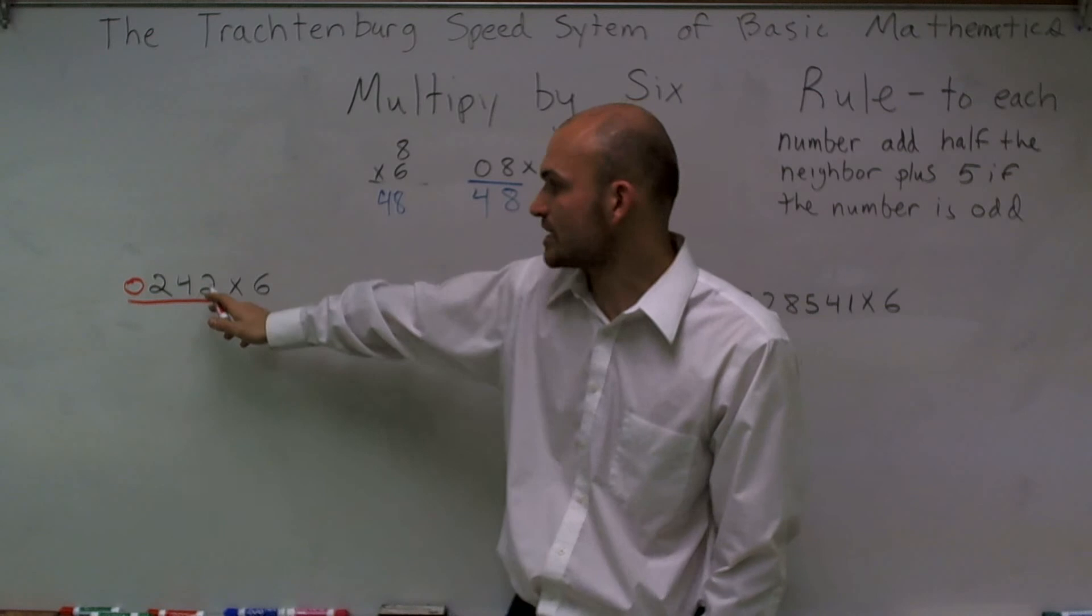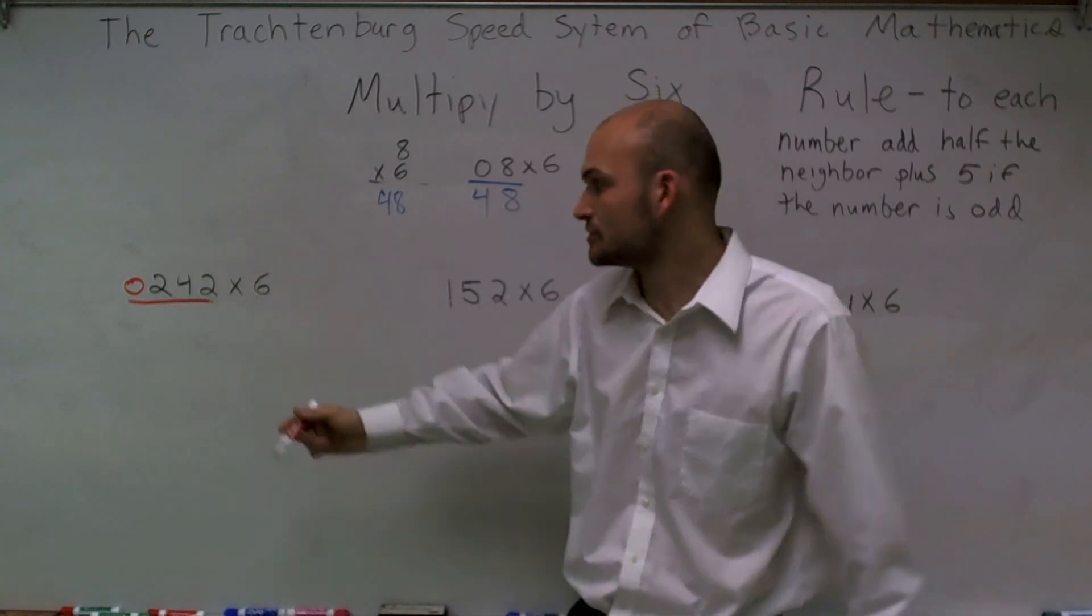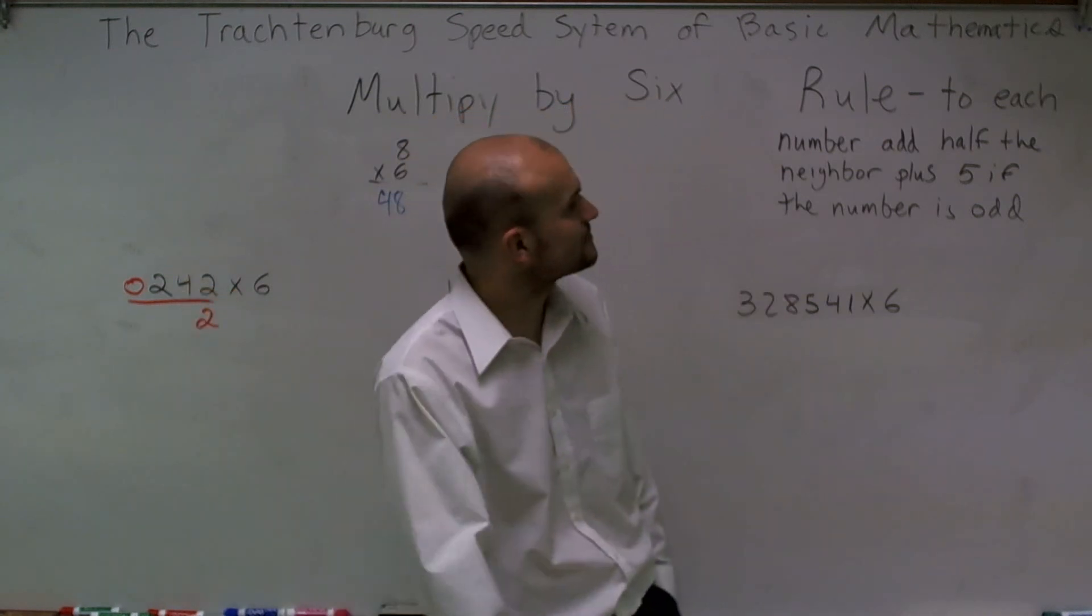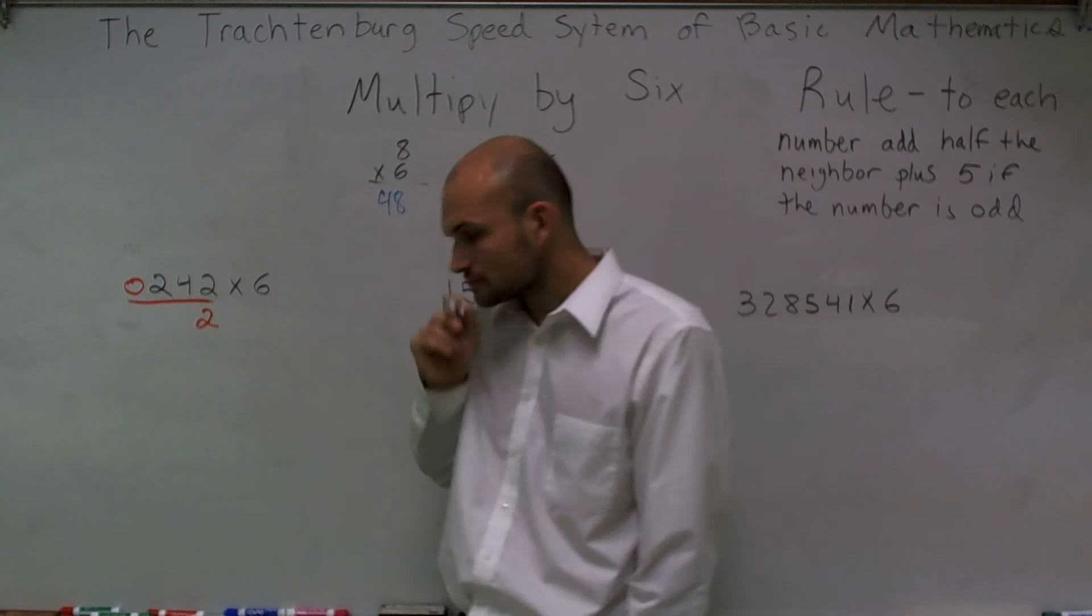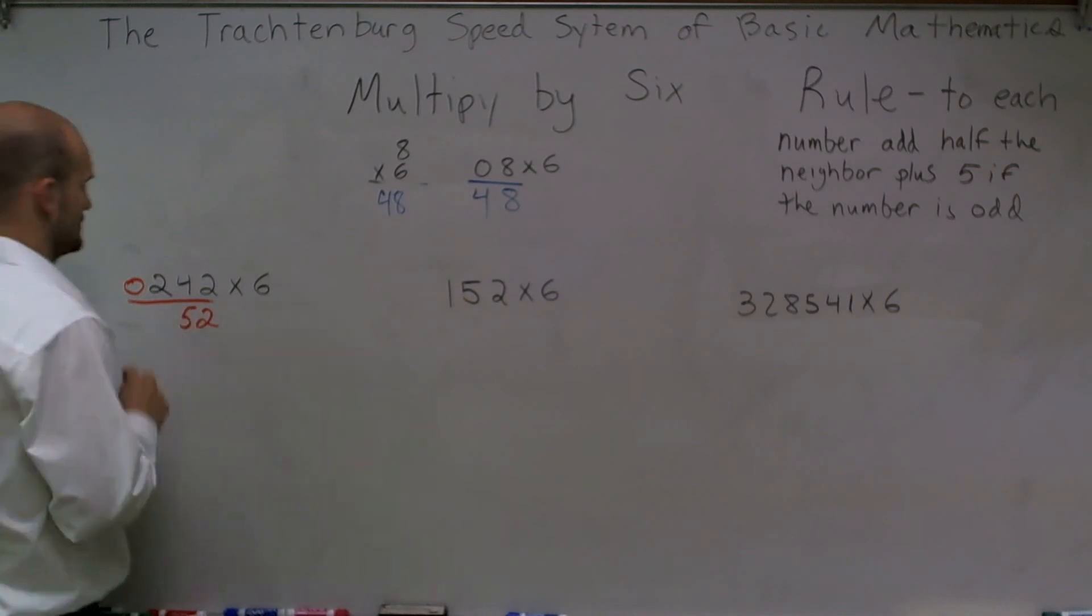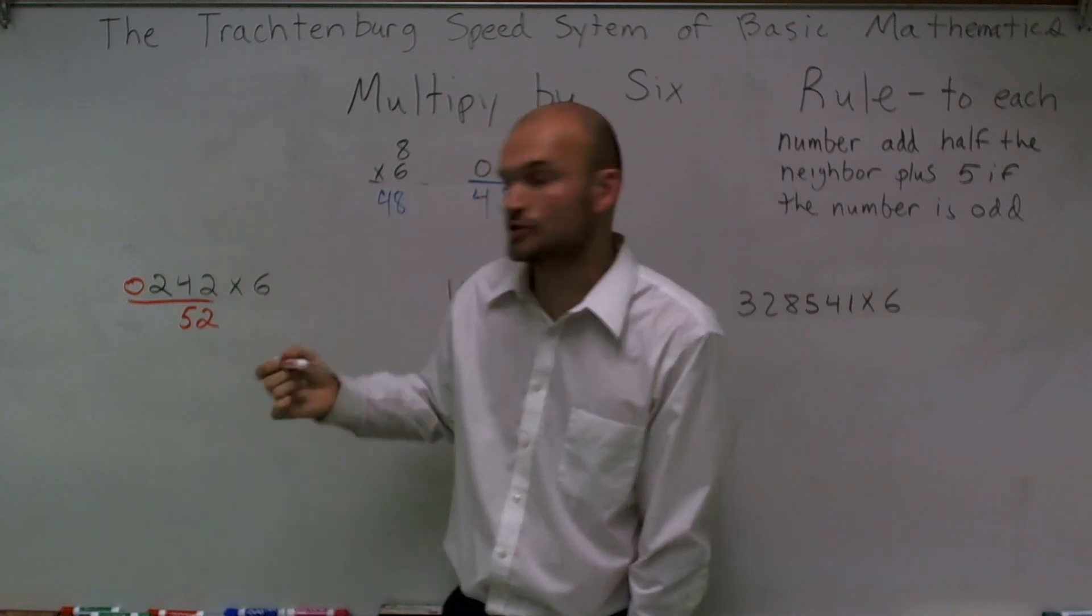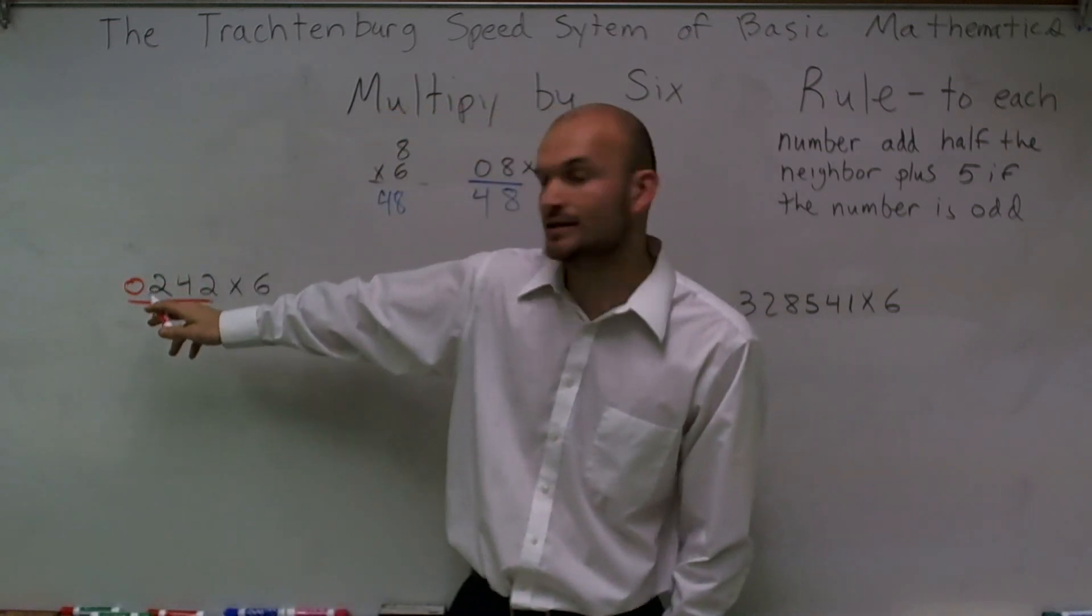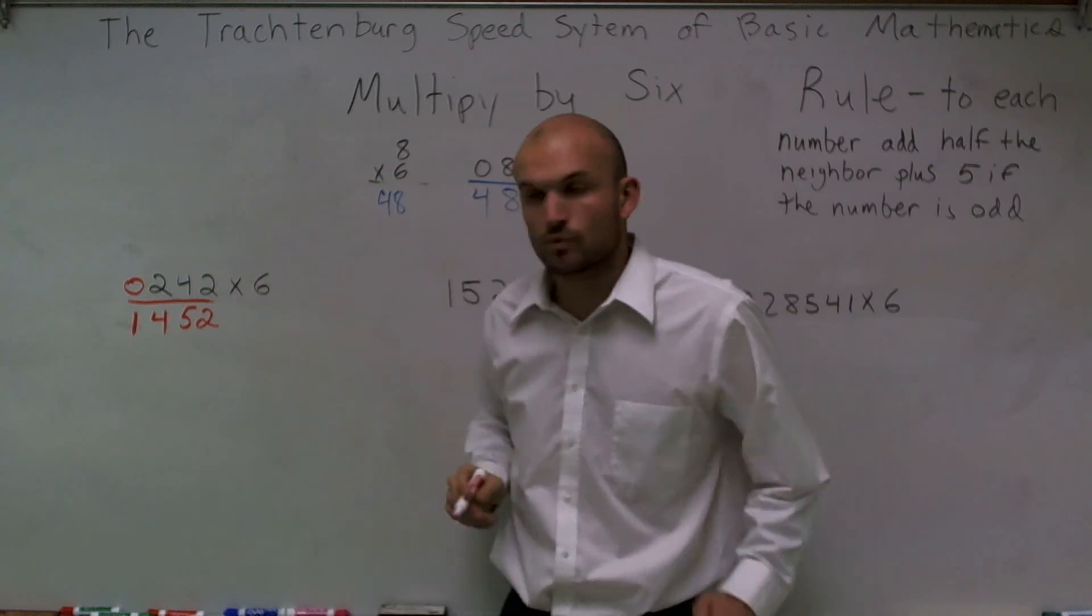The first thing we're going to do is just follow the rules. We're going to start with our first digit and say: two, add half of the neighbor. Well, there's no neighbor for two, so I can just drop it down. Then I'm going to take four, and it says add half of the neighbor. So four plus half of two is going to be one. Half of two is one, plus four will be five. Then I'll take two, add half of four, which is two. So two plus two gives me four. Then I take zero, add half of two, which is one. So zero plus one is one. Therefore, I've been able to figure out my final answer is 1,452.